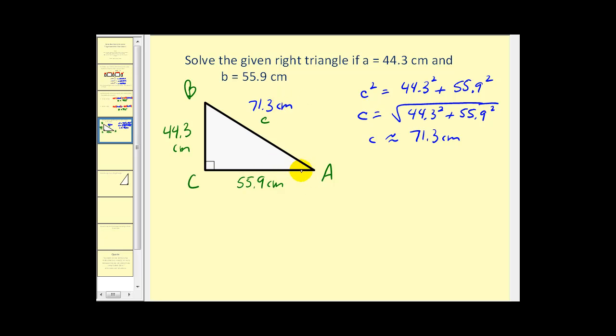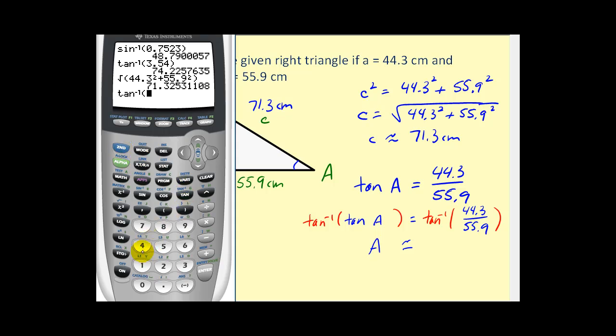Now we need to find angle A and angle B as well. And so what we can do now is, so if we look at angle A, we could pick any of the three trigonometric functions. Let's look at tangent. Tangent of angle A must equal the ratio of the opposite side to the adjacent side. So 44.3 divided by 55.9. And we can find angle A if we take the arc tangent of both sides. The left side will give us angle A. And we can find this value on the graphing calculator. So second tangent. And we can see our angle is roughly 38.4 degrees.